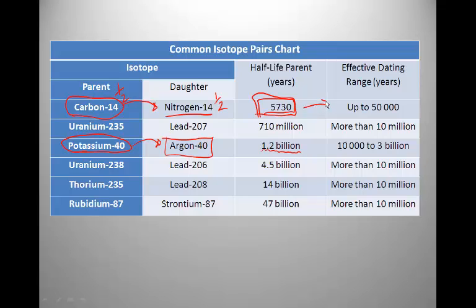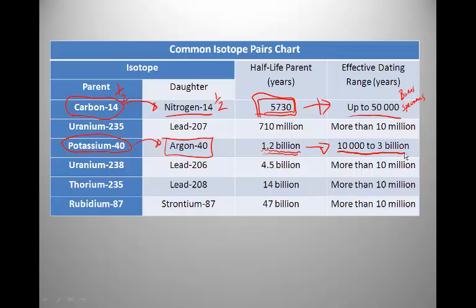Because of the differences in half-lives, we can actually use these isotopes to date different materials. The effective dating range for carbon-14 is up to 50,000 years, and it's useful for dating the age of bones and other biological specimens that have been around up to 50,000 years, but as recent as even 20, 30, or 40 years. Potassium-40, on the other hand, has a half-life of 1.2 billion years, so it can't be effectively used for dating newer samples.